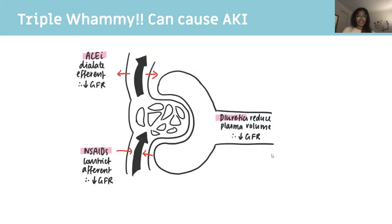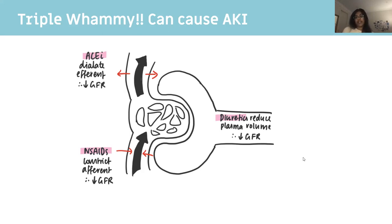The triple whammy: three drugs you should never give together. ACE inhibitors dilate the efferent vessel and decrease GFR. NSAIDs constrict the afferent vessel, also affecting the gradient. Diuretics reduce plasma volume and decrease GFR. Together they're a triple whammy — this is very buzzwordy and you need to know it.